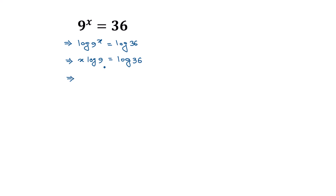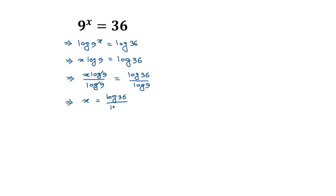Dividing both sides by log 9, we can write x times log 9 divided by log 9 is equal to log of 36 divided by log of 9. The log 9 terms cancel out, so it remains x is equal to log of 36 divided by log of 9.